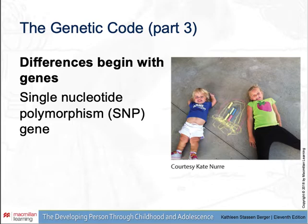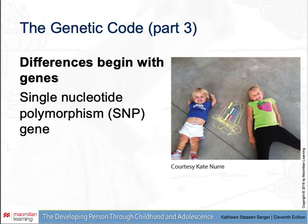Differences begin with alleles, some of which reflect transpositions, deletions, or repetitions of those 3 billion base pairs. Single nucleotide polymorphism, or SNP, is a variation in just one part of the code — two, three, or more versions — and may be inconsequential or destructive. The different variations are what makes us all look different and unique.